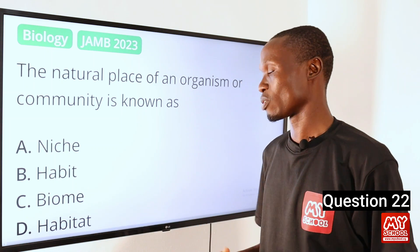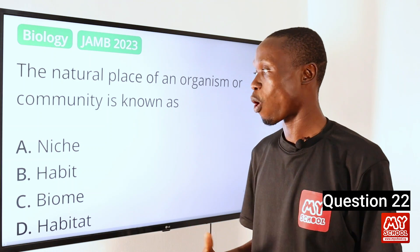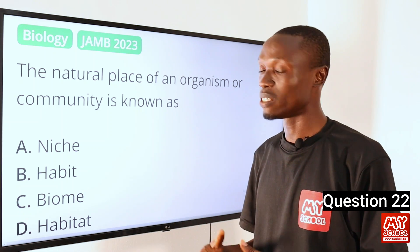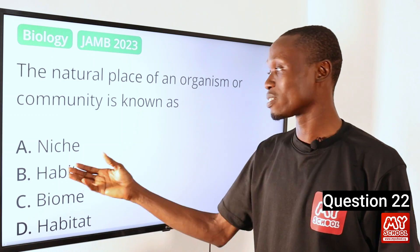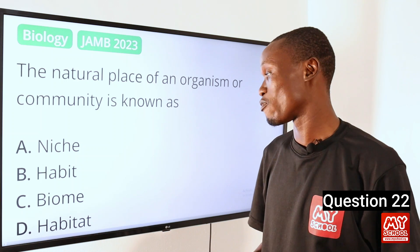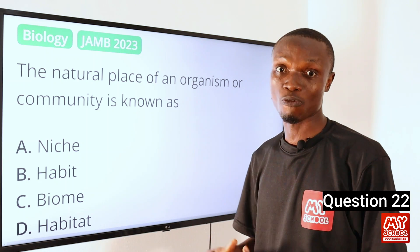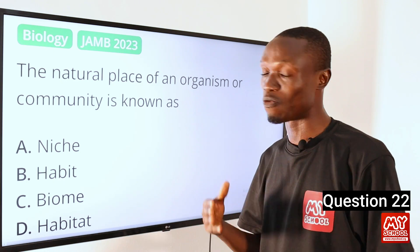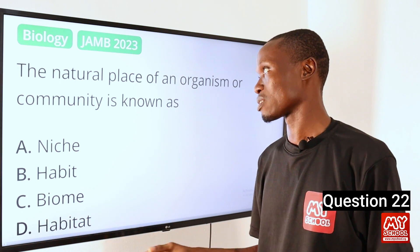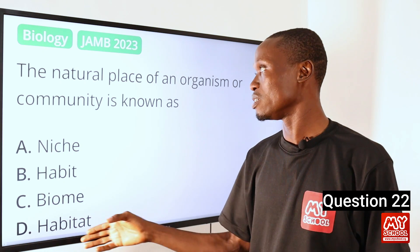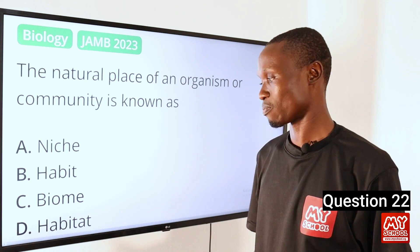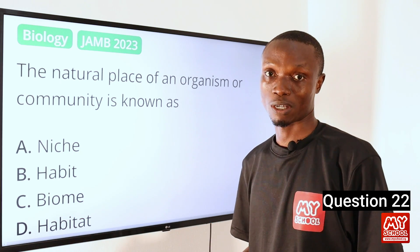Option A is niche — niche simply means the role or position of an organism within its environment. Option C is biome, and biome simply refers to a large geographical area with distinct climate, vegetation and wildlife. So option D is the correct answer because it is the natural place where an organism lives.